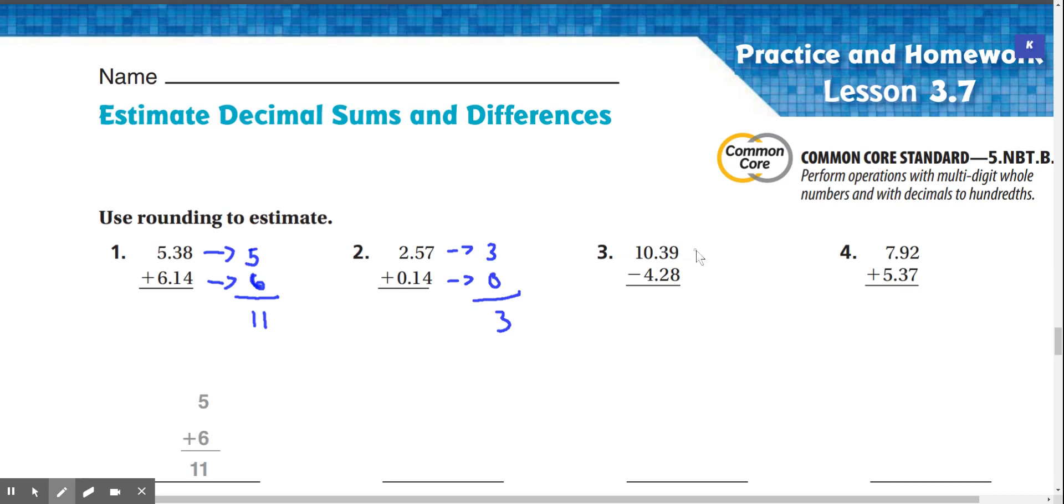Number three, 10.39 is going to round to just 10, and 4.28 is going to round to just 4, and 10 minus 4 is about 6.